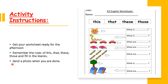So we need to remember the rules of this, that, these, and those, then fill in the blanks. Look at the picture and remember the rule: this, that, these, those. We need to see — is it far or near? Is it many or just one? If it's one, we use this and that. If there's a lot of them, we use these and those.